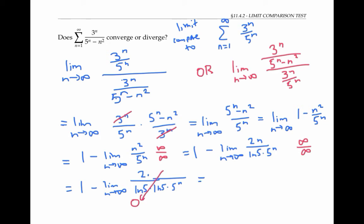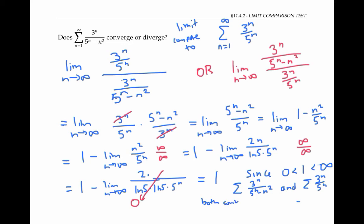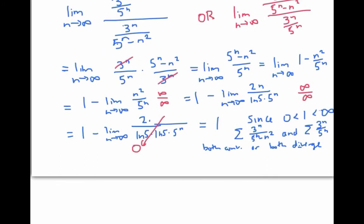And my final limit is one. Since one is bigger than zero and it's finite, the limit comparison test tells me that my original series and my comparison series either both converge or both diverge. But my comparison series is a geometric series with ratio three fifths, so it definitely converges. Therefore, by the limit comparison test, our given series also converges.